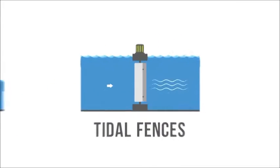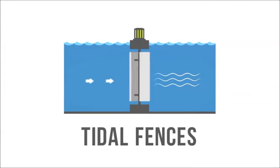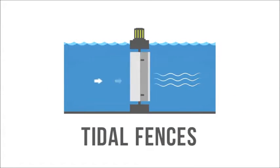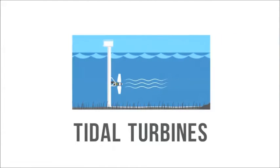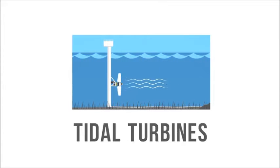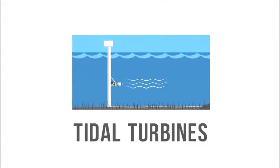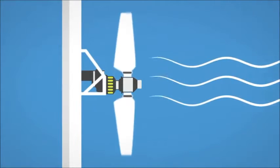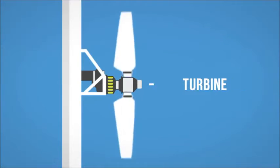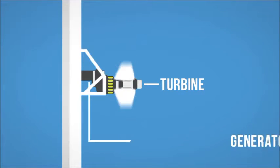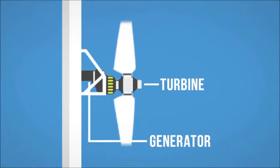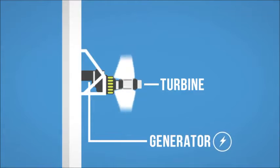Tidal fences are turbines that operate like giant turnstiles, whereas tidal turbines are similar to wind turbines, only underwater. In both cases, electricity is generated when the mechanical energy of tidal currents turns turbines connected to a generator. The generator produces electricity.